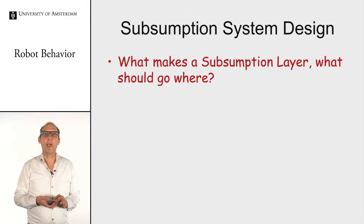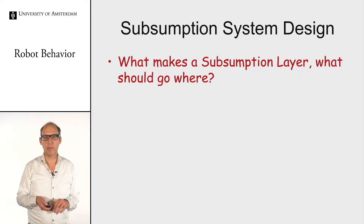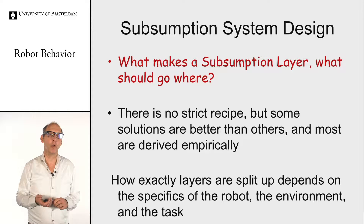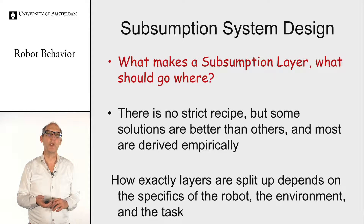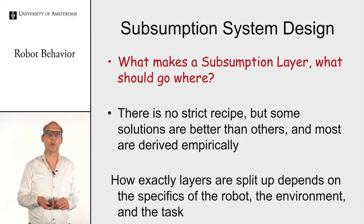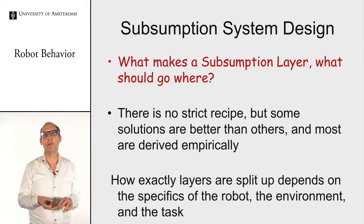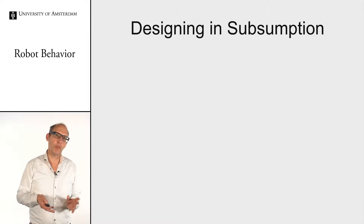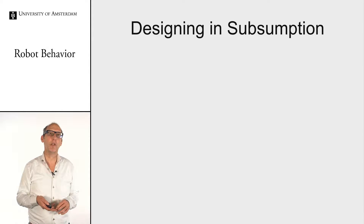With different layers and complex schemes, how do you decide what goes where? That's always a difficult question. Experience shows there is no strict recipe, but some solutions work better. You can build it up incrementally — start with simple things, test them, then build up the next layers with new modules. What modules you need depends on your robot, the environment, and what you want the robot to do.